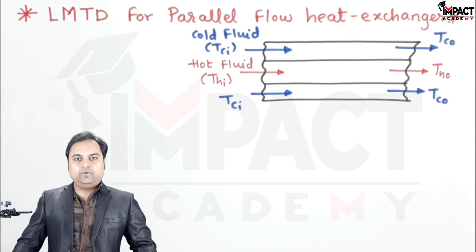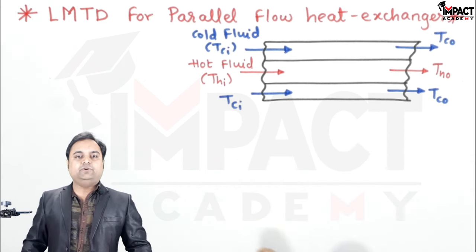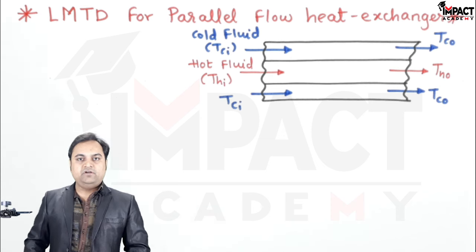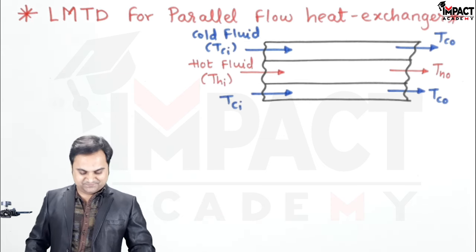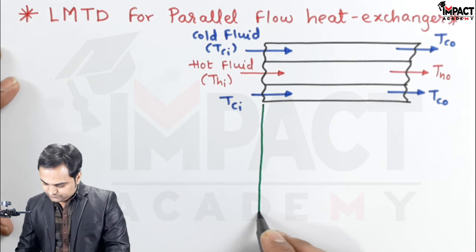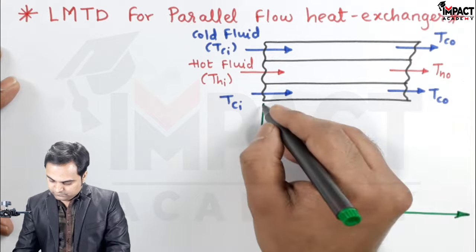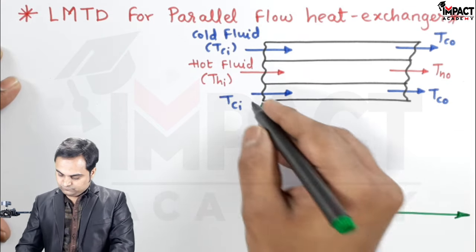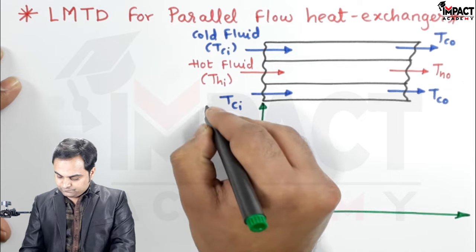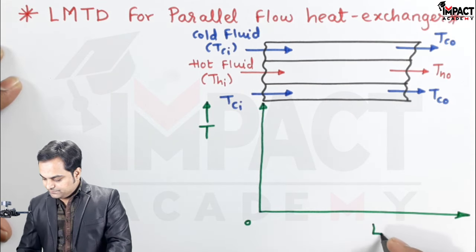Just below this heat exchanger I would be drawing the temperature distribution — the temperature profile — for the parallel flow heat exchanger. On the y-axis we have temperature and on the x-axis we have the length of the heat exchanger.